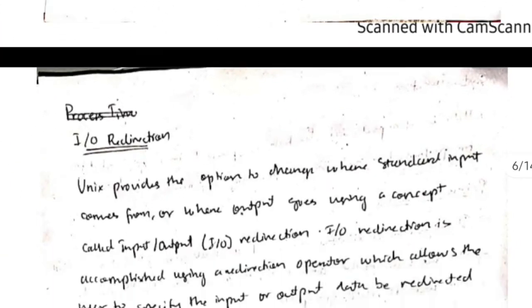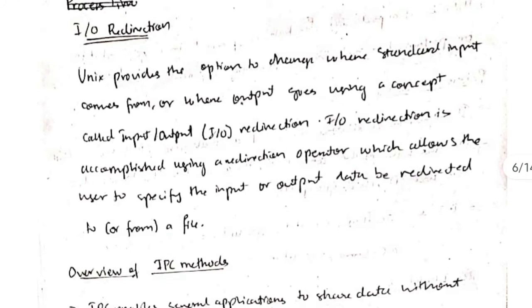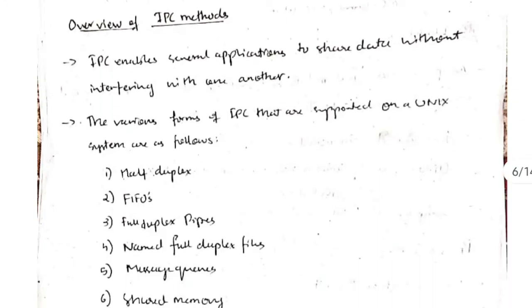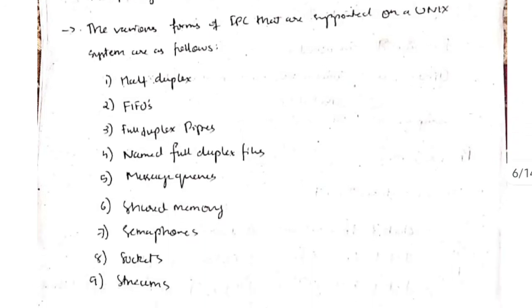Next we have I/O redirection, that means we are setting where the input comes from and where the input goes to. The next topic is the overview of IPC methods. IPC is inter-process communication that is used to share data among multiple processes without interfering with one another. Some of the features are half duplex, full duplex, and message queues, which we will be discussing in the upcoming topics.